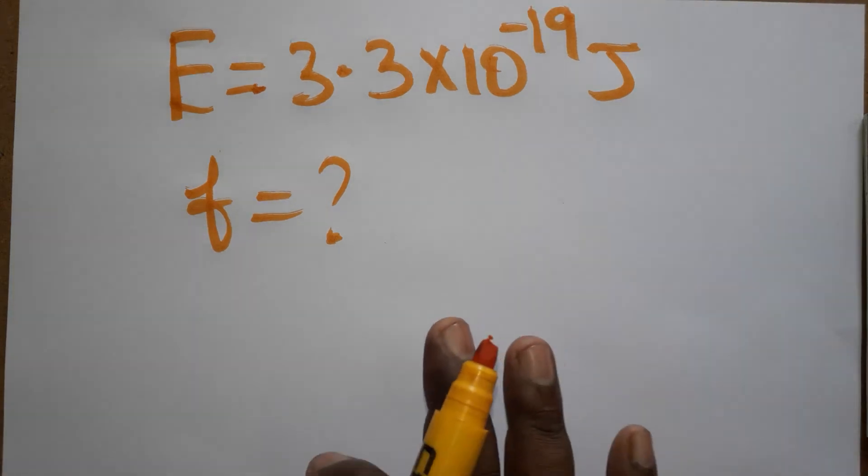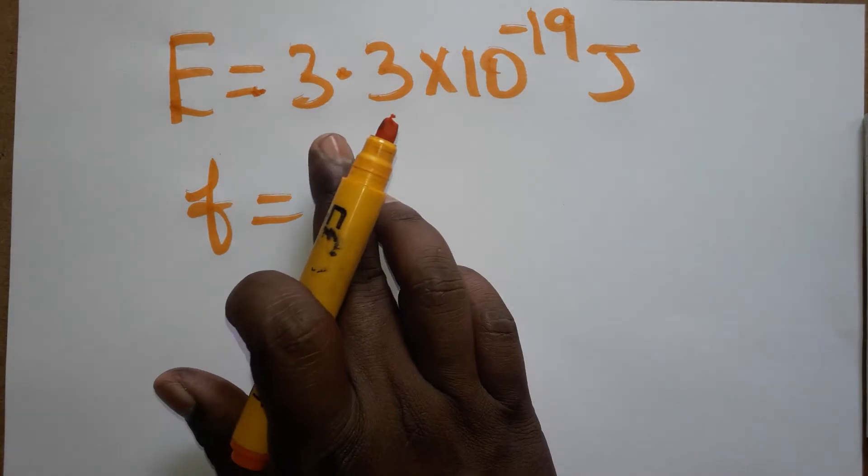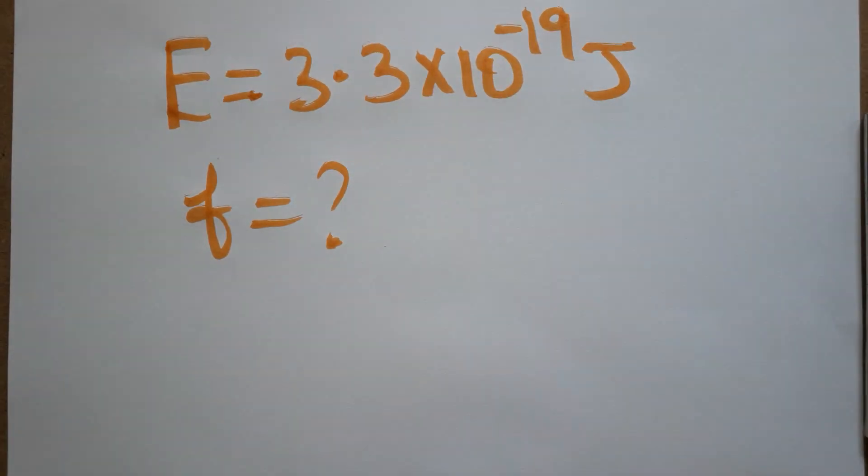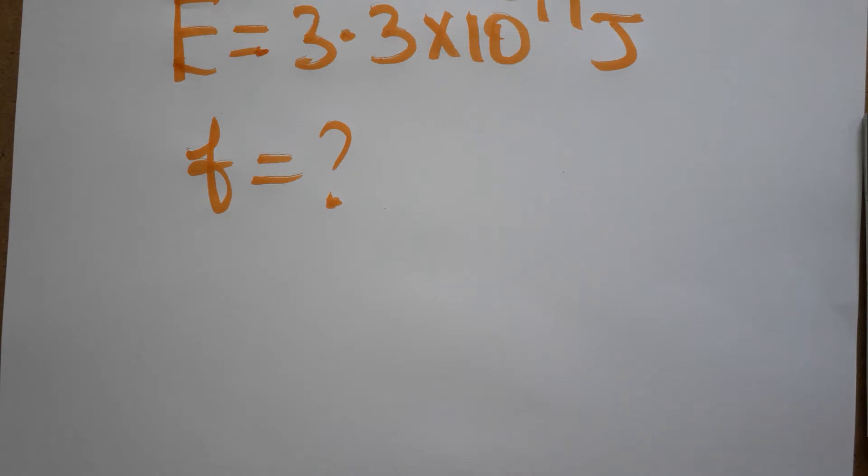Today we are going to learn how to convert from energy to frequency. In case the energy is 3.3 × 10^-19 joules, how can we find the frequency? As we know, the formula: energy is equal to Planck constant times frequency.